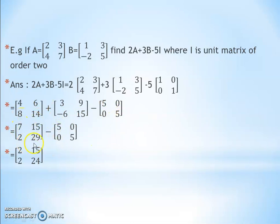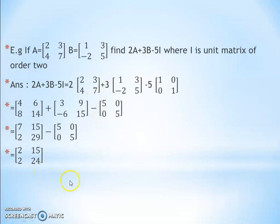Performing the subtraction: 7-5=2, 15-0=15, 2-0=2, 29-5=24. So we derive that 2A + 3B - 5I = [2, 15; 2, 24]. In this example we used addition of matrices, subtraction of matrices, scalar multiplication, and the identity matrix.